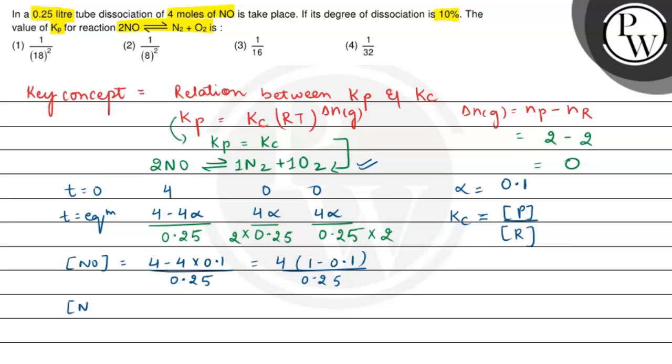Concentration of N2 is 4 multiplied by 0.1 divided by 2 multiplied by 0.25. And concentration of O2 is same: 4 multiplied by 0.1 divided by 2 multiplied by 0.25.